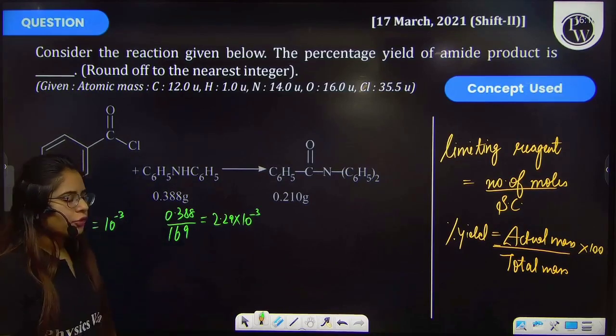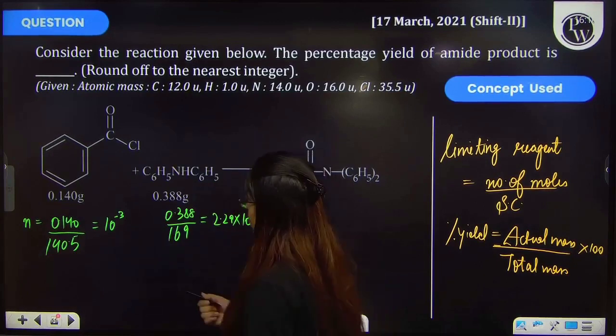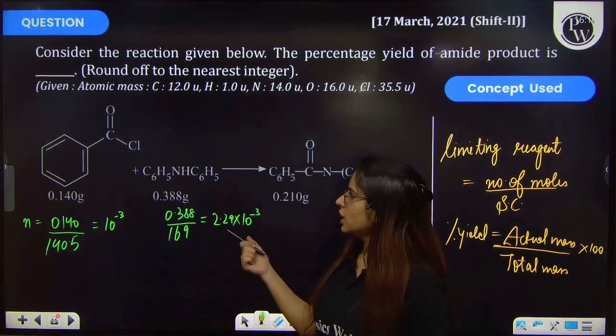Now you have to tell the limiting reagent. For limiting reagent, you have to divide this number of moles with stoichiometric coefficient.